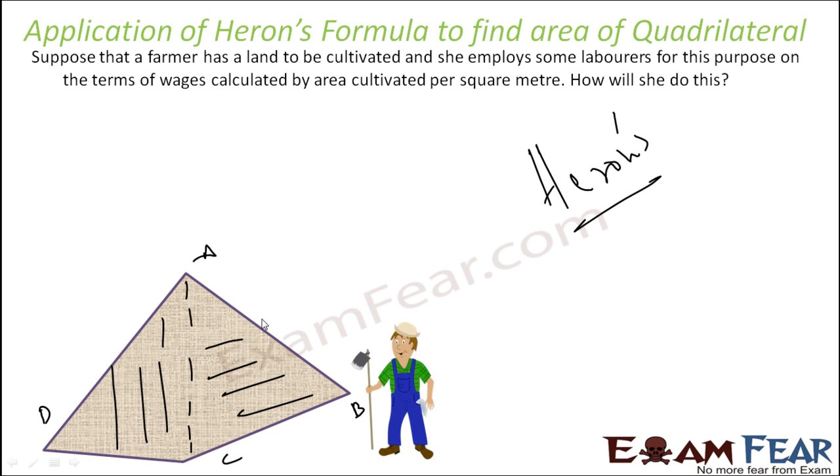We'll find each triangle's area and add them together to get the area of his whole plot. Let's see one example.